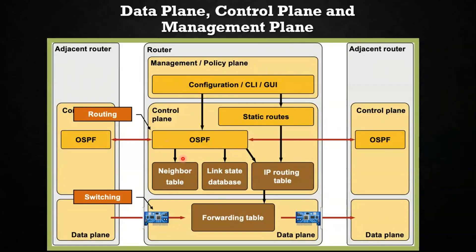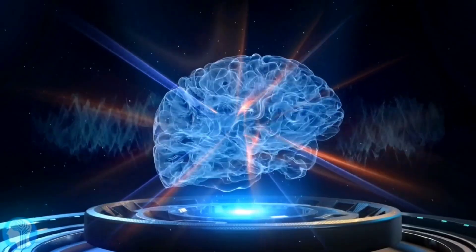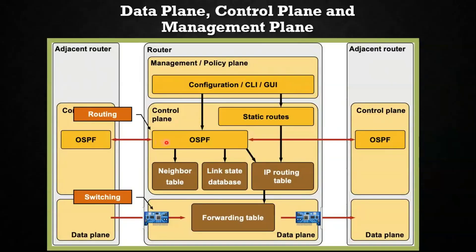In traditional networking, the data plane is typically implemented in hardware. The control plane is responsible for making decisions about how network traffic should be forwarded. We can say the control plane is the brain of the switch, because it gives instructions on how traffic should be forwarded from one device to another using the data plane. It involves tasks such as routing protocol management, network topology discovery, policy enforcement — for example, using OSPF and BGP.